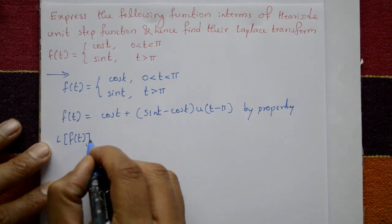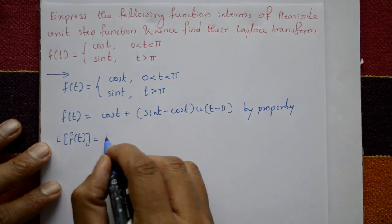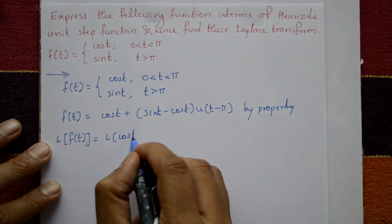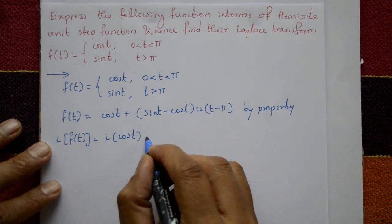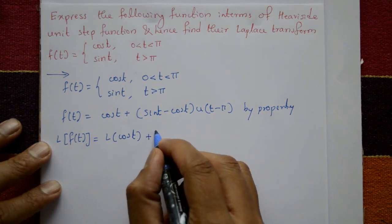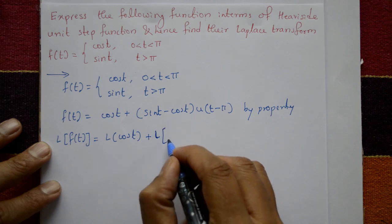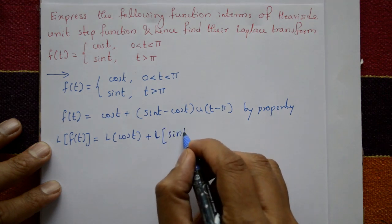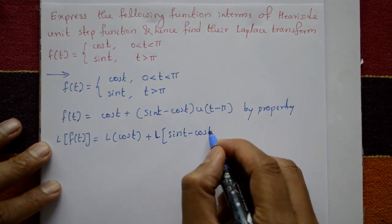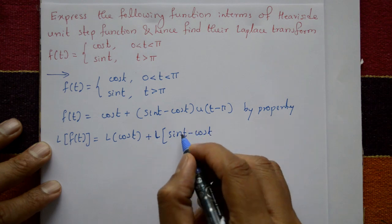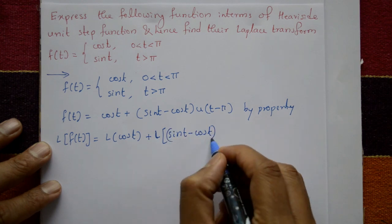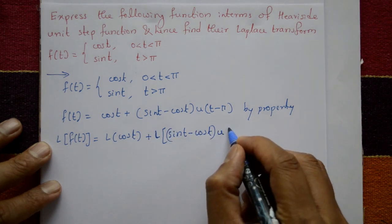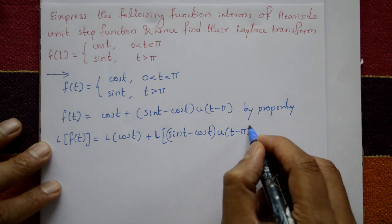Applying the Laplace transform on both sides: L{f(t)} = L{cos(t)} + L{(sin(t) − cos(t)) · u(t − π)}. Call this equation number one.